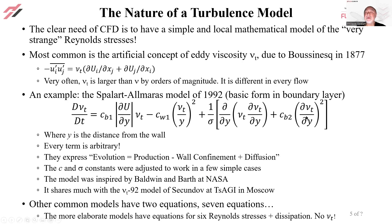All of these were picked to have the right dimension. And then the sigma and the C constants were adjusted to work on a few simple cases like a wake and a mixing layer and a boundary layer.